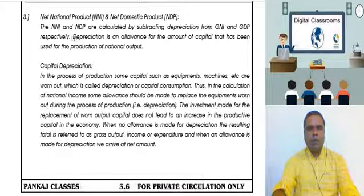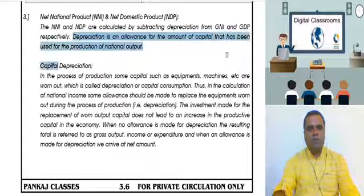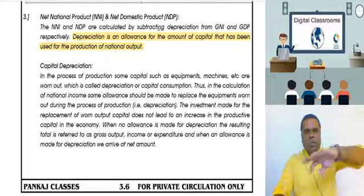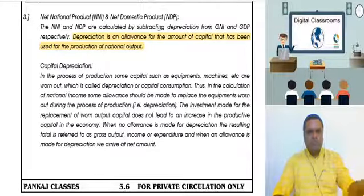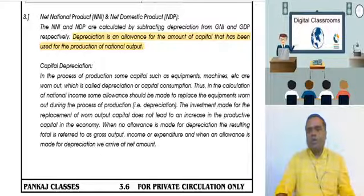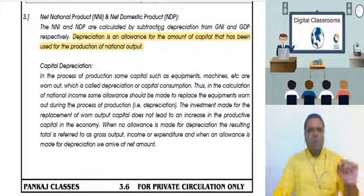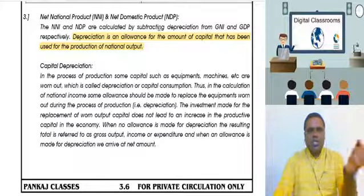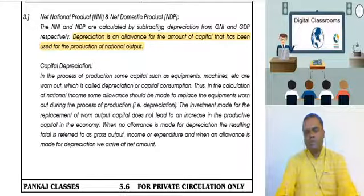Gross minus depreciation gives us the net figure. So if you take gross national product minus depreciation, you get net national product. If you take GDP minus depreciation, you get NDP. And to convert domestic to national, you add net factor income from abroad — receipts minus payments.